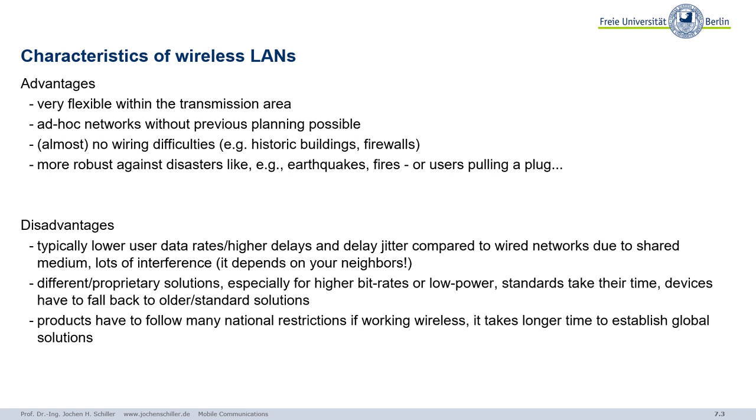Think of historic buildings or buildings with real firewalls consisting of brick or concrete — you would have to drill holes, which is not allowed in historic buildings from the 16th or 17th century, and you'd have to close the holes again. Wireless avoids this problem — you don't need wires, only a power supply. Wireless LANs are also more robust against disasters like earthquakes or fires. After earthquakes, first responders not only help people but also create local networks, and wireless LAN technology is one of the technologies used for this.